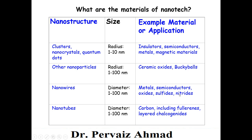We also have nanowires of different materials that can be metal, semiconductor, oxide, sulfide, and nitride. Nanotubes again have diameters from 1 to 100 nanometers. Those nanotubes can be of carbon, including polymerase, halia, chalcogenide, boron nitride nanotubes, and some other materials. We have given examples of very few materials here due to time restrictions.